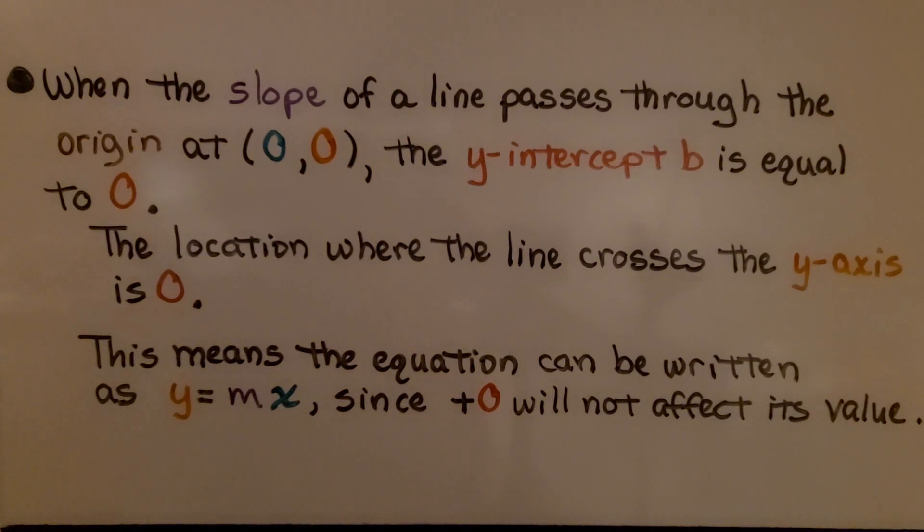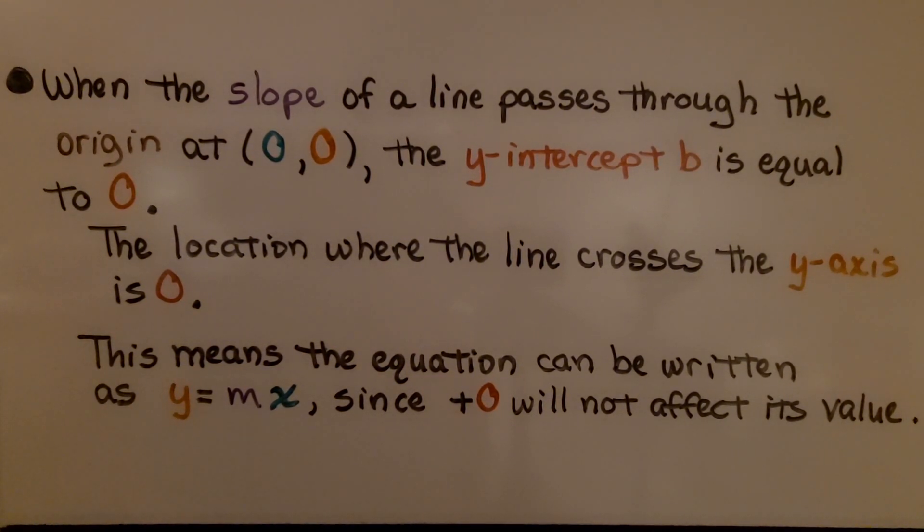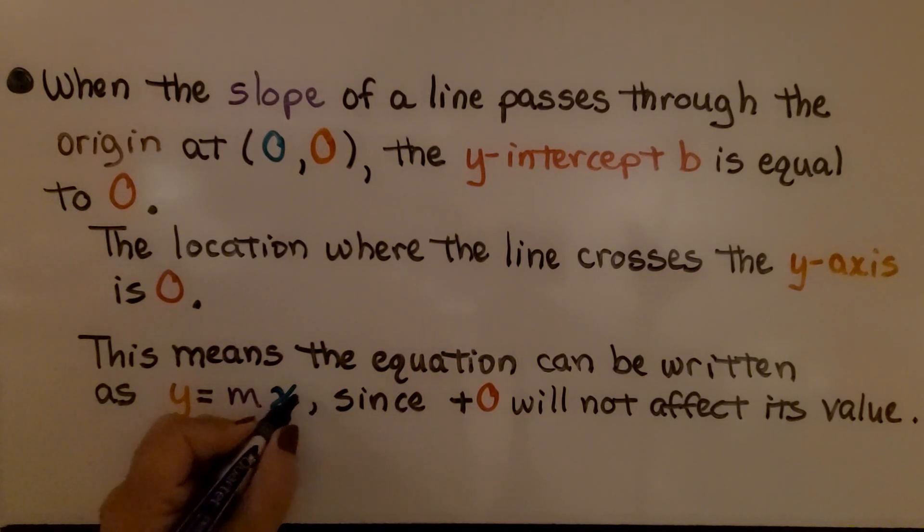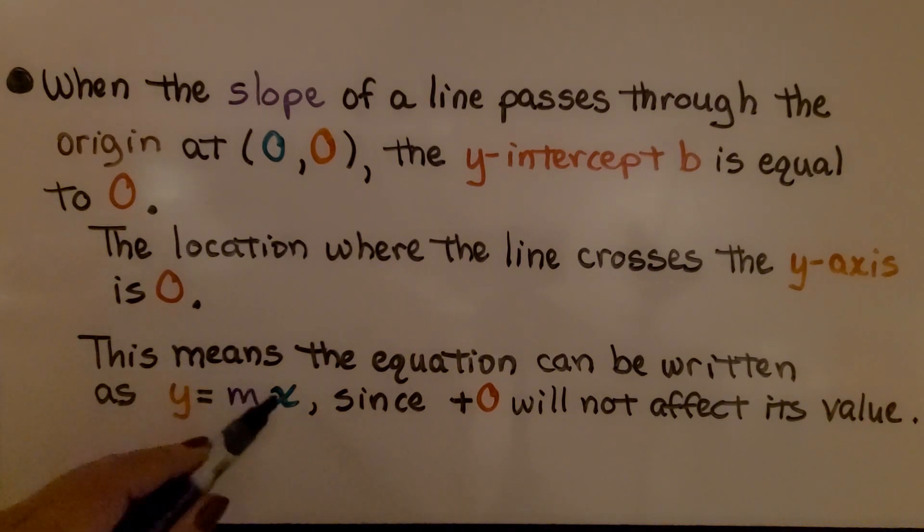When the slope of a line passes through the origin at (0,0), the y-intercept b is equal to 0. The location where the line crosses the y-axis is 0. This means the equation can be written as y equals mx. Since plus 0 will not affect its value, we don't have to put plus b at the end of this for plus 0. That's not going to affect its value. We can just write it as y equals mx.